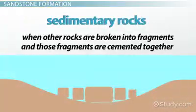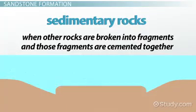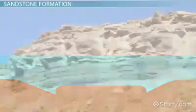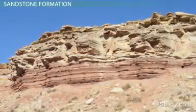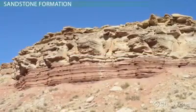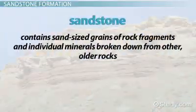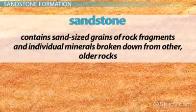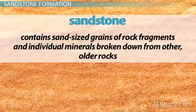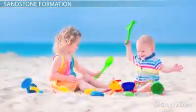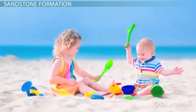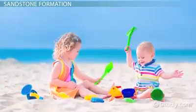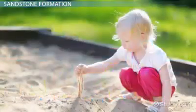Sedimentary rocks are made when other rocks are broken into fragments, and those fragments are cemented together to form a new rock. One of the most common types of sedimentary rock is sandstone. As the name implies, sandstone contains sand-sized grains of rock fragments and individual minerals broken down from other, older rocks. We all have a sense of how big sand grains typically are from our experience going to the beach or playing in a sandbox.